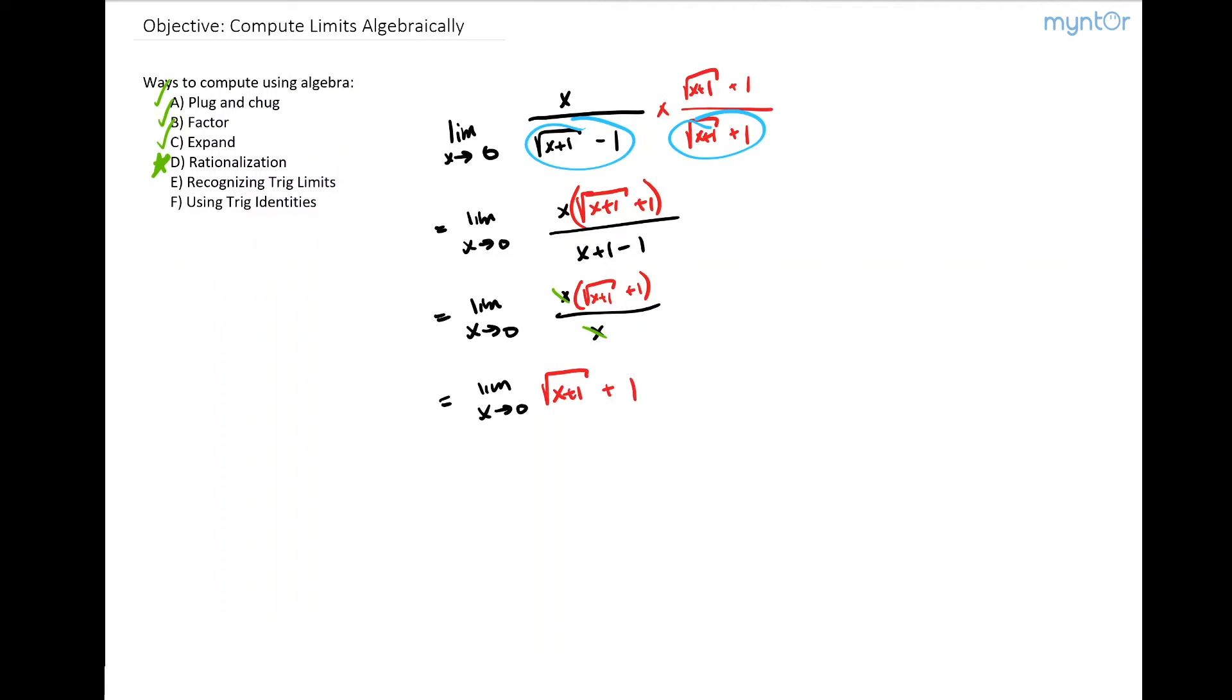This is easy enough to plug and chug into. We plug zero into our x value, and this equals square root of zero plus one plus one,